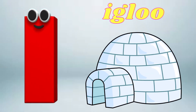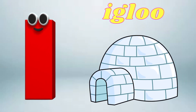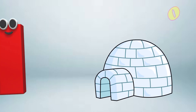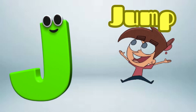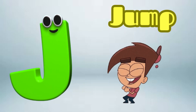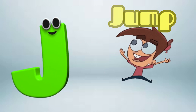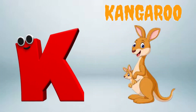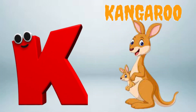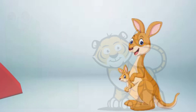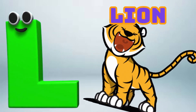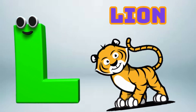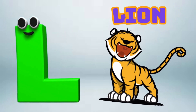I is for Igloo, I-I-Igloo. J is for Jump, J-J-Jump. K is for Kangaroo, K-K-Kangaroo. L is for Lion, L-L-Lion.